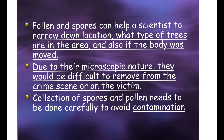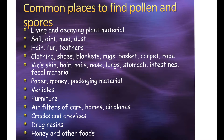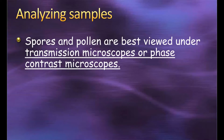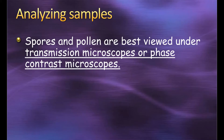When these structures are collected, it needs to be done very carefully to prevent contamination — especially between one kind of pollen or spore and another. There are many common places pollen and spores are found, making it easy for them to become part of a crime scene or to be found on or even inside a victim. Analysis is fairly straightforward: since they are microscopic, most analysis uses either a transmission microscope or a phase contrast microscope, which allows scientists to see specific shapes, colors, and patterns within the spore or pollen grain.